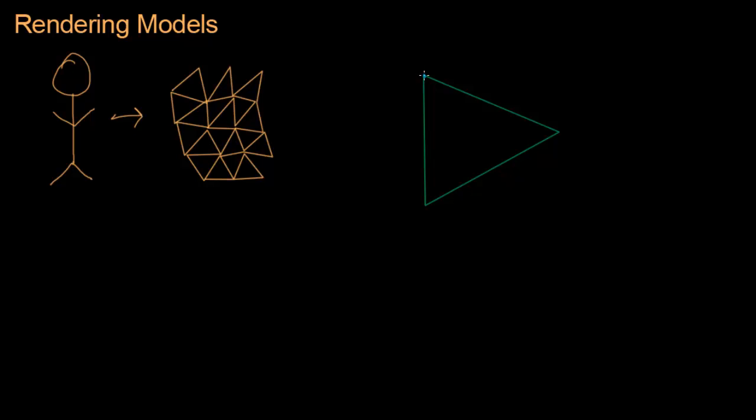This is a triangle and it has three vertices - we call them a, b, and c. They are vertices or some people say vertexes, whatever. We also have three edges: this is an edge, this is an edge, this is an edge.